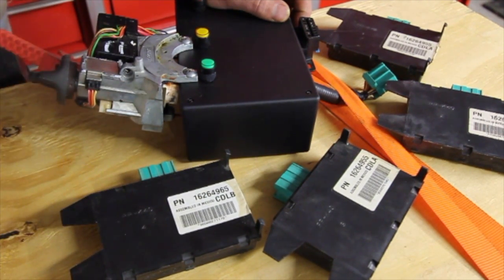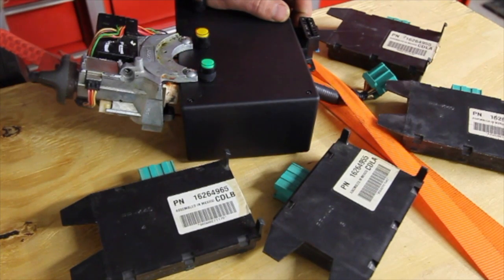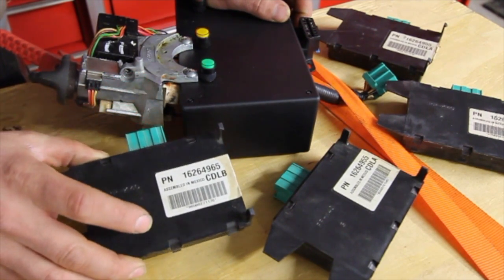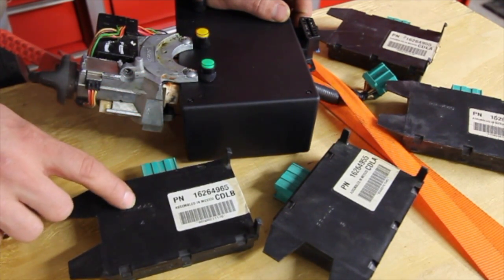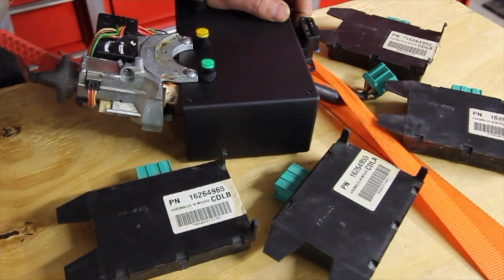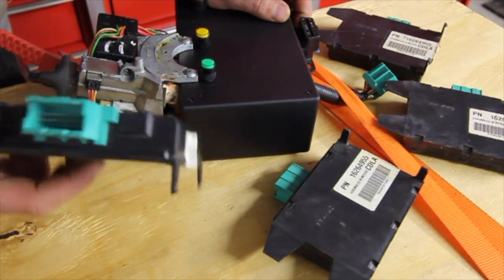When these go bad, they don't tell the computer anything and the car will not start. It thinks that you're trying to start it with a screwdriver or whatever. Now, the security light, if the security light is on and it stays on, then most likely this is the culprit.